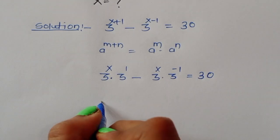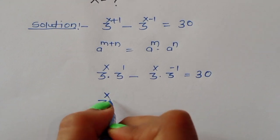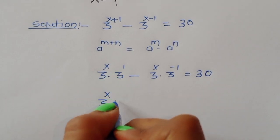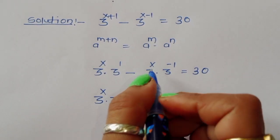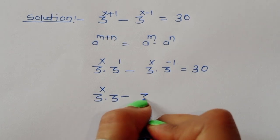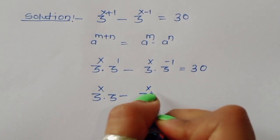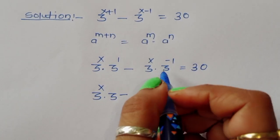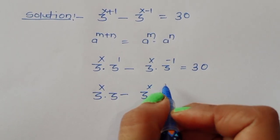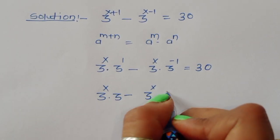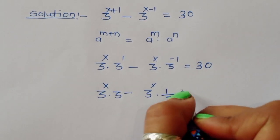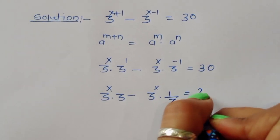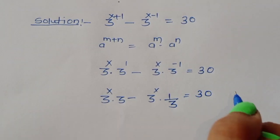So 3^x times 3^1 minus 3^x times 3^(-1) — and 3^(-1) can be written as 1 upon 3 — equals 30.